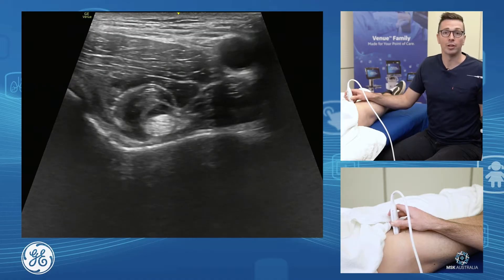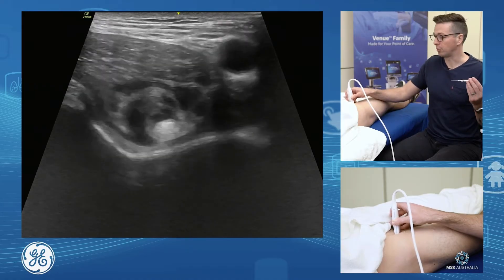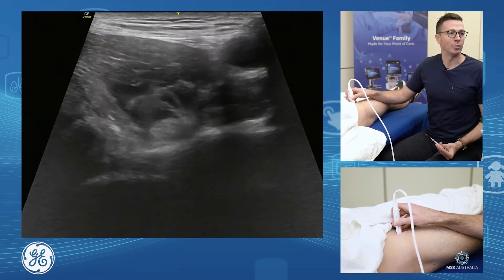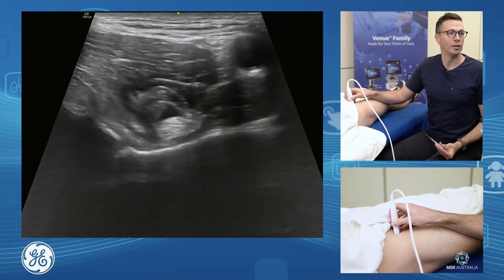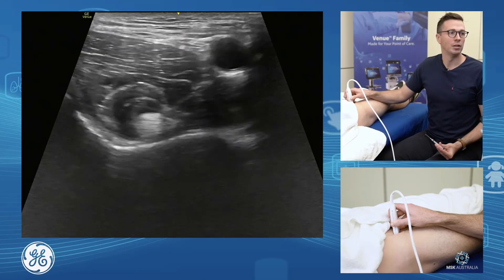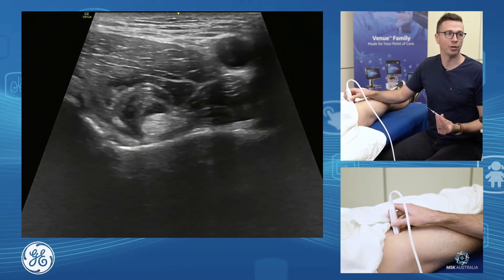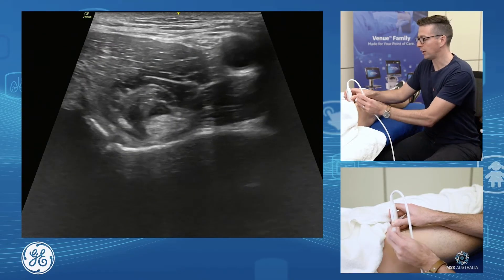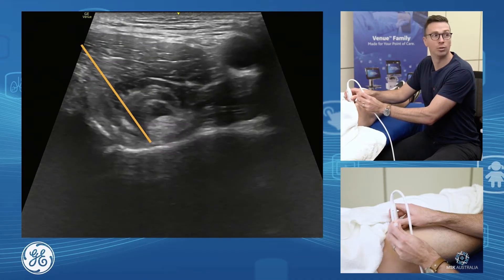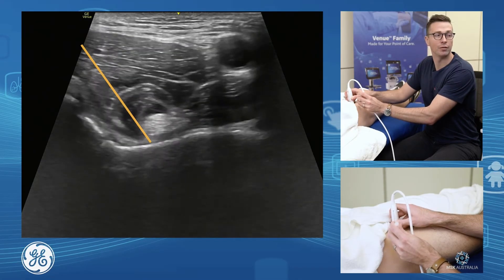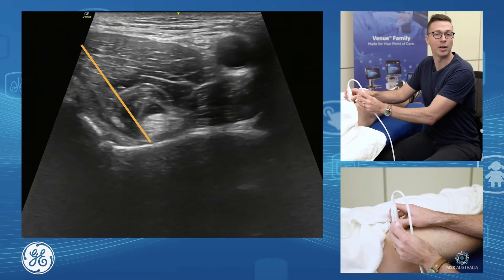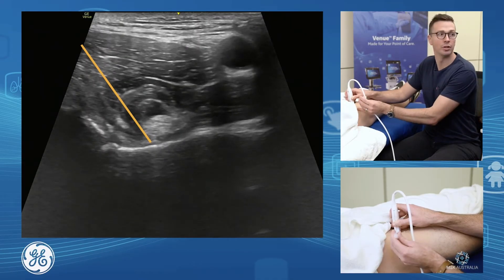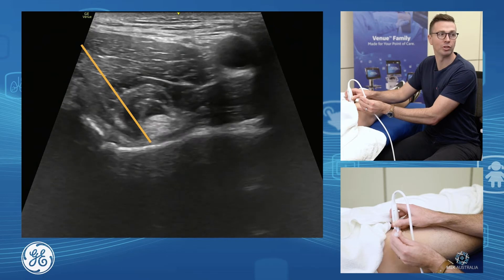If we were to do an iliopsoas bursal injection, this is the approach we would use. Find your iliopsoas tendon sitting at the top — find your head, acetabulum, line yourself up, fix your anisotropy, and get a nice approach in here. Bring your needle in at about a 45 degree angle laterally, and slip down to hit the top of the acetabulum. Slip underneath the tendon, in onto the acetabulum to do your iliopsoas bursal injection.